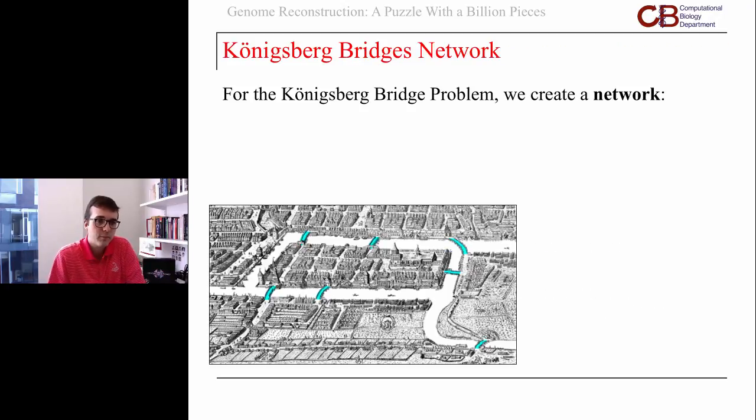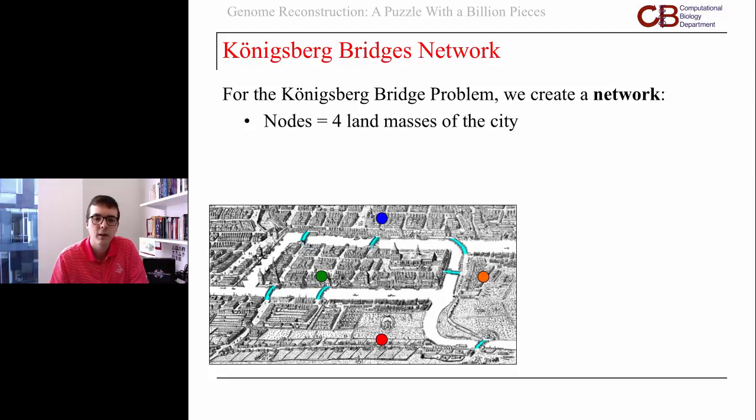We're getting there. For now, I want to show you how to solve this Königsberg bridge problem. We create a network, and Euler's idea was if you live on this middle river island, it doesn't matter where you start on that island. Crossing the bridges is the same for you. We can condense that whole island down to a single point. In fact, there are four land masses of the city: a north bank, a south bank, and two river islands.